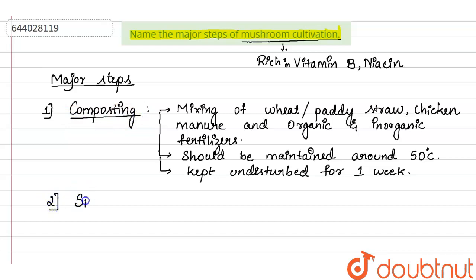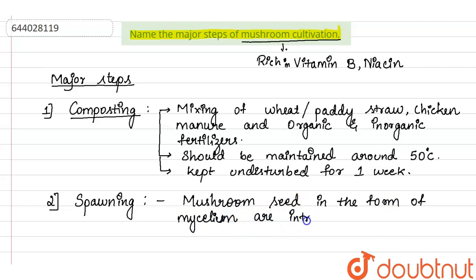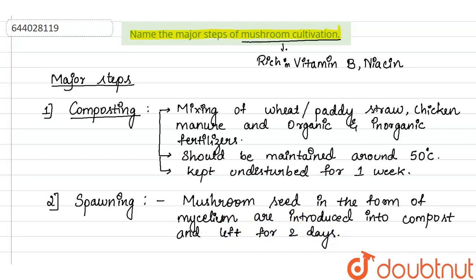The second step is called spawning. Here we use mushroom seeds, which are basically spores of mushroom — that is, mycelium — which are introduced into the compost and left for two days.